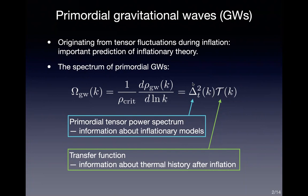One is the primordial tensor power spectrum, which is determined from the dynamics during inflation and contains information about the inflationary models. The other is the transfer function, which describes how gravitational waves propagate after inflation and contains information about the thermal history after inflation. In order to calculate the spectrum of gravitational waves, we have to know both of these quantities by fixing the models of the early universe.